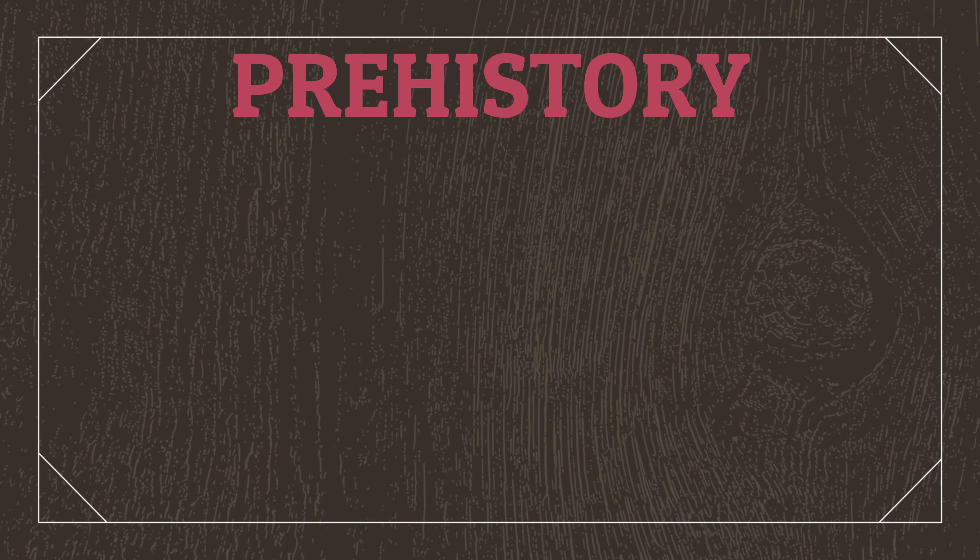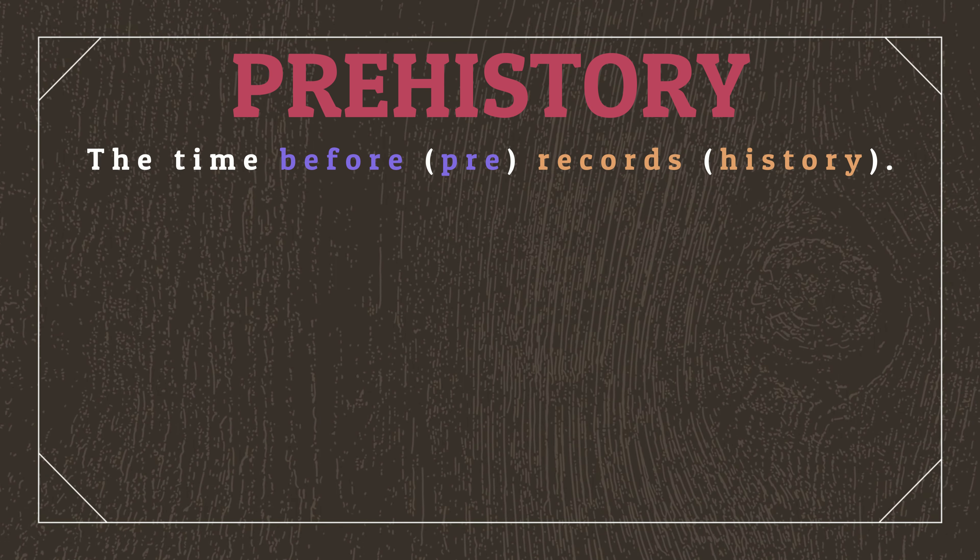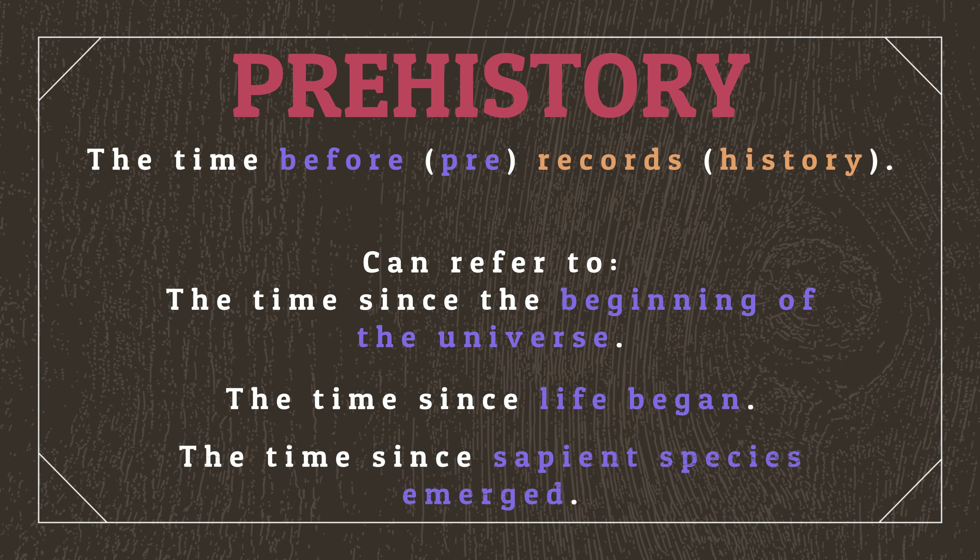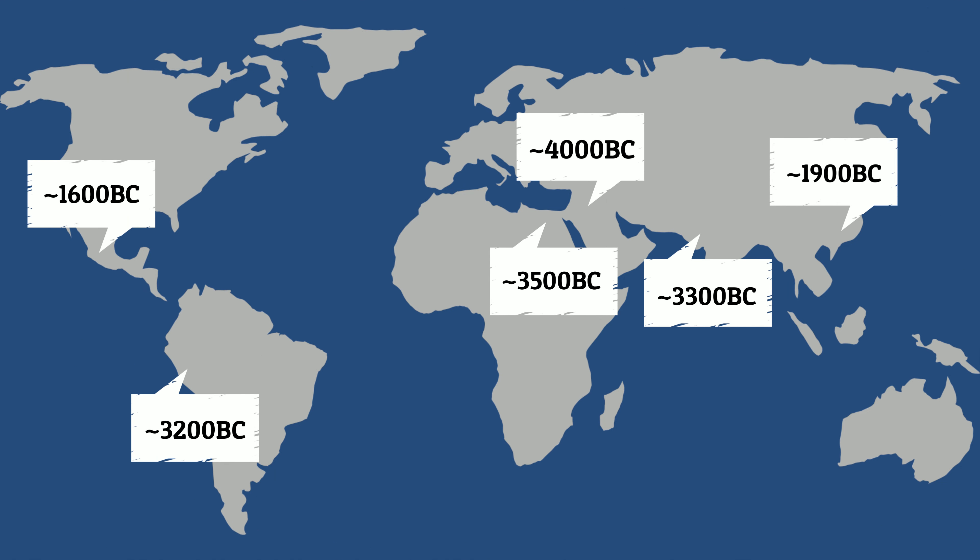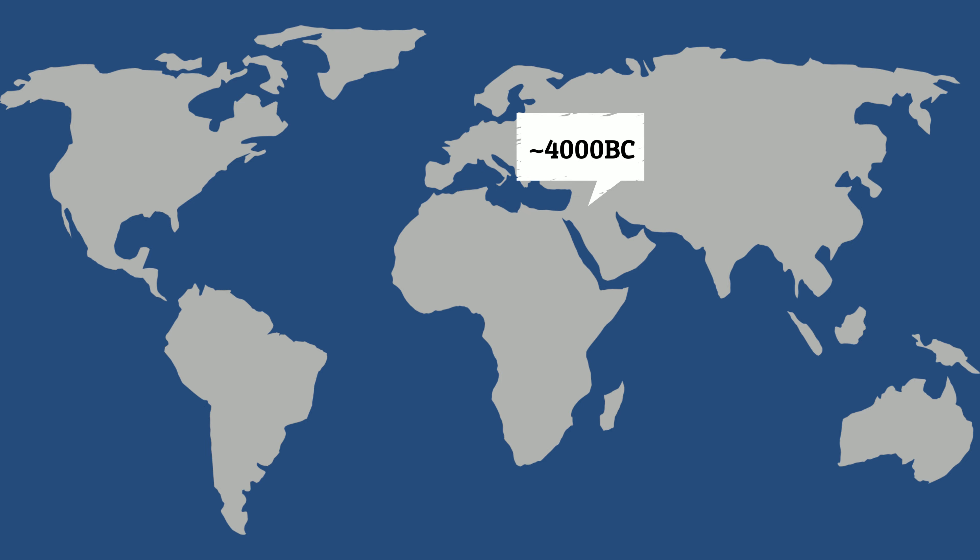Alright, let's do this. Prehistory, by its literal definition, refers to all periods of time before records began being kept, which can technically be extended back to the beginning of the universe. However, it's more generally considered to refer to either the time since life began, or the period since human-like beings appeared. This final definition, which describes the prehistoric era as starting with the emergence of the first sapient species, is what we'll be focusing on today. Where prehistory ends, though, varies depending on which parts of the world we're looking at. However, we consider our species transition out of prehistory to be when the first writing emerged in Eurasia.